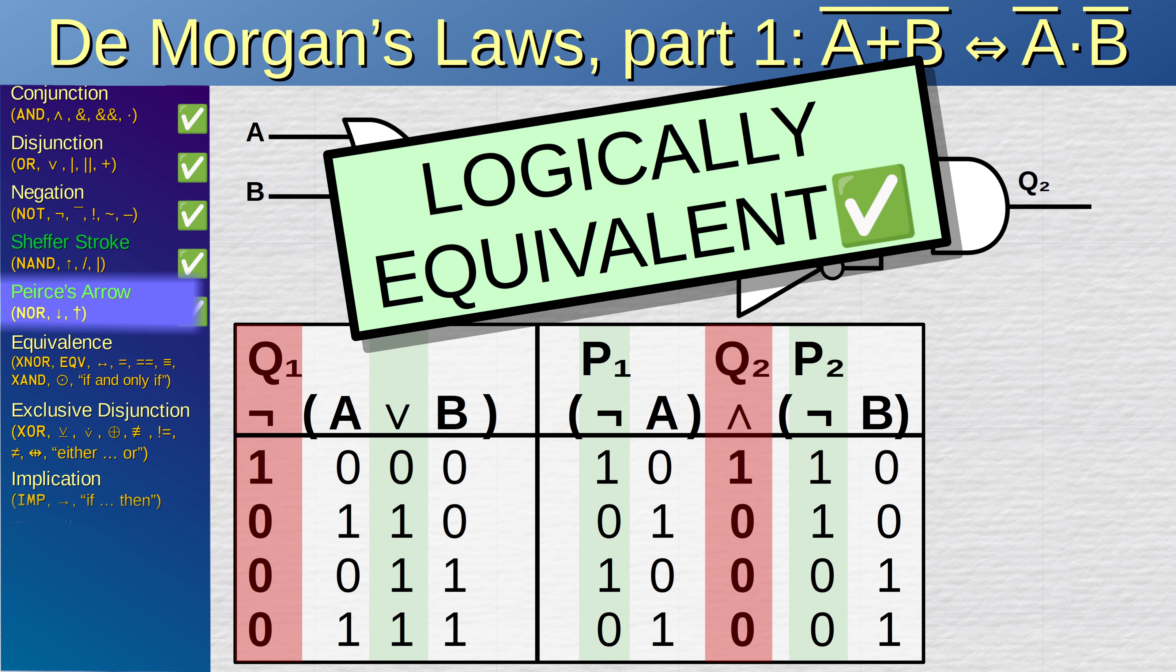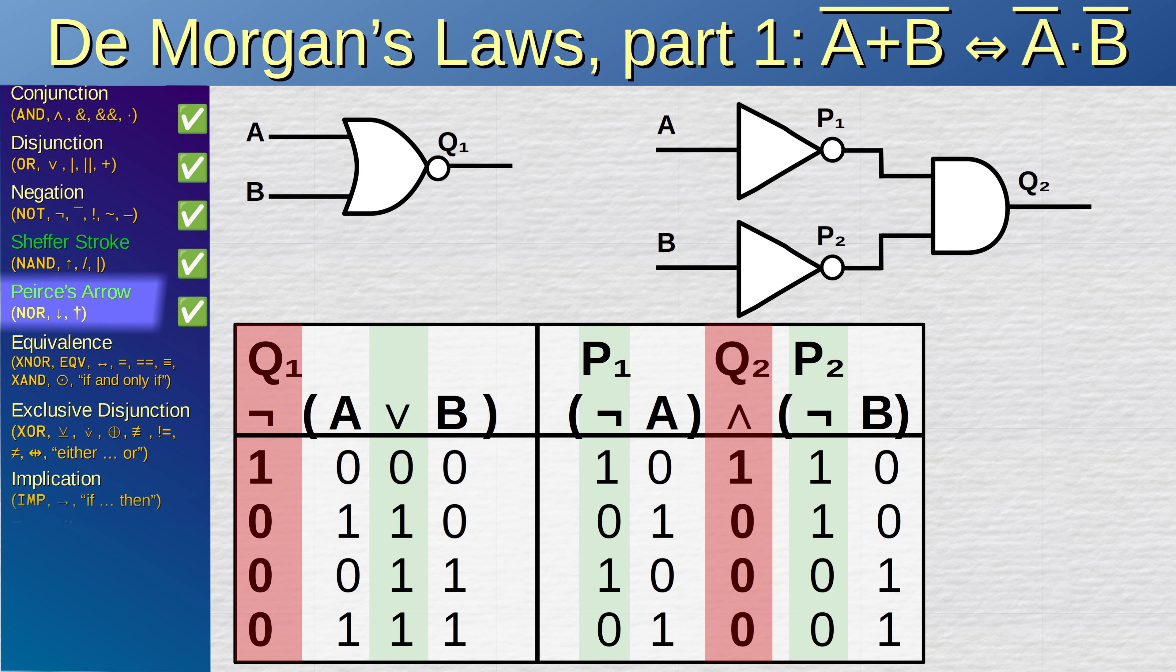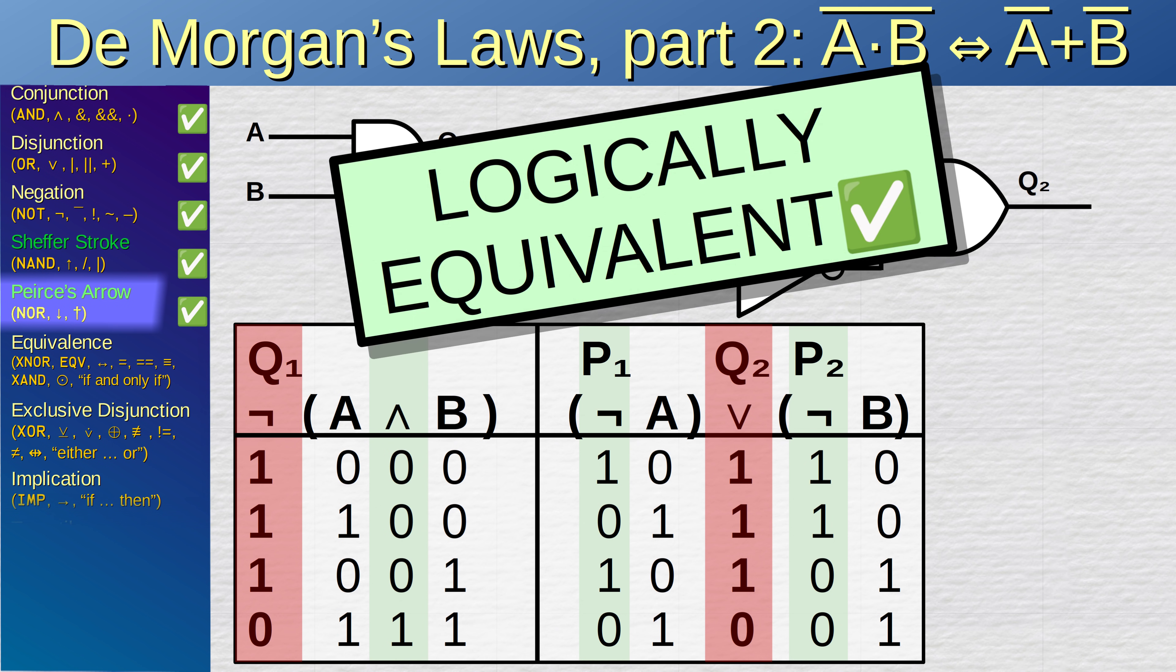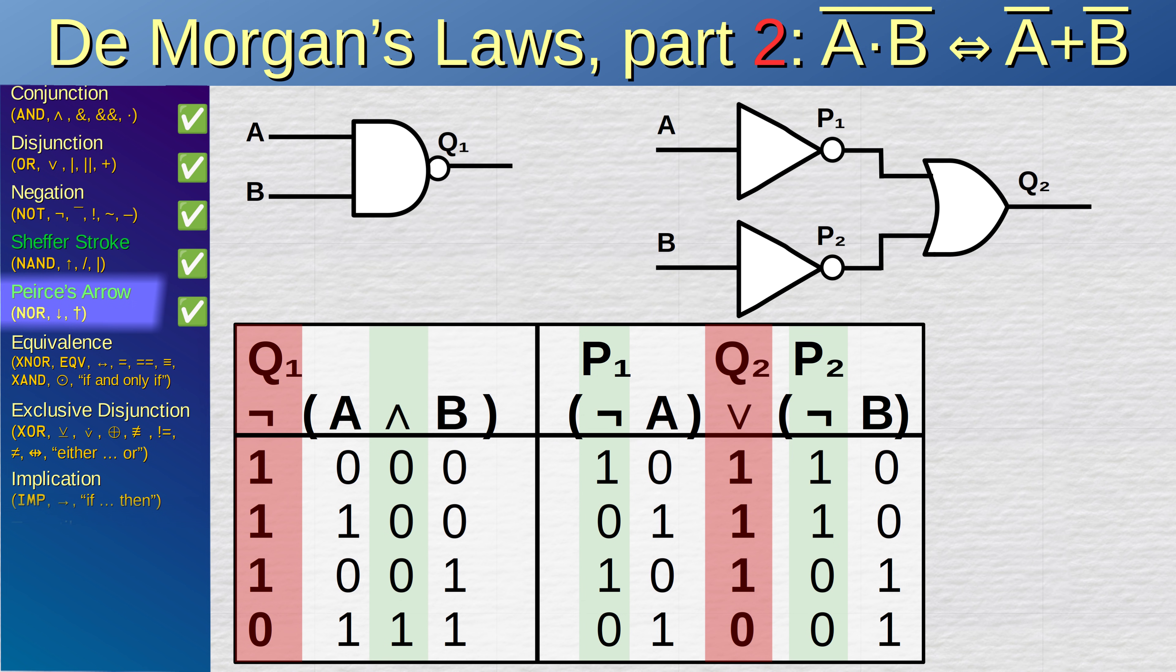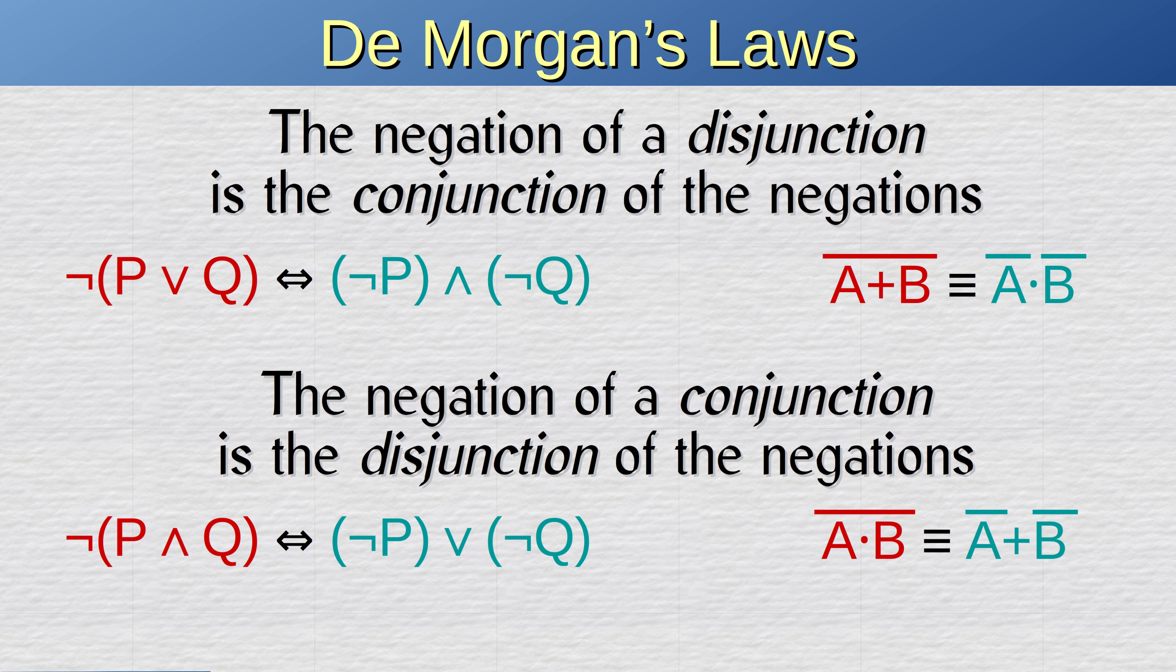This is an important equality to keep in mind, as it helps a lot when optimizing your logical expressions. This law, called De Morgan's law, also holds true if you exchange the NORs and the NANDs. These two circuits are logically equivalent too. The rules can be written in English like this. The negation of a disjunction is the conjunction of the negations, and the negation of a conjunction is the disjunction of the negations.